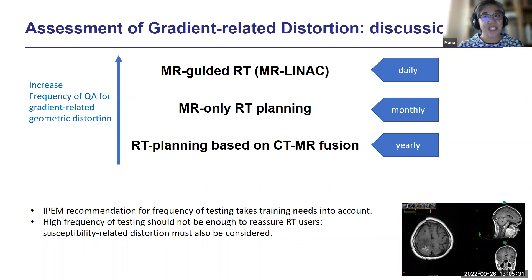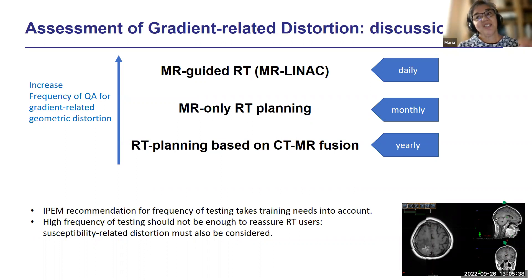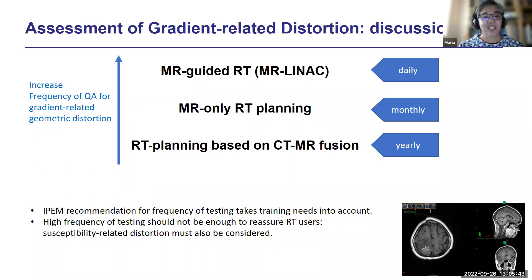It's also important that people build up their own datasets to see how stable the distortion pattern is. A very high frequency of testing is sometimes used to reassure users that no distortion is happening — but users should not be reassured by that, because the distortion I showed earlier would not have been picked up by a test focused on the gradient coils. Test objects are very symmetrical and easy to shim, whereas our subjects are not.